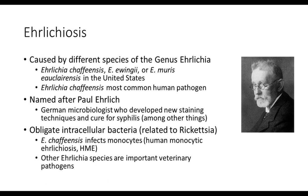Now I want to talk about ehrlichiosis, which we'll focus on for the majority of the day. Ehrlichiosis is caused by different species of the genus Ehrlichia, including Ehrlichia chaffiensis, Ehrlichia ewingii, or Ehrlichia muris ocularensis. Ehrlichia chaffiensis is the most common associated with human disease. These are all named after Paul Ehrlich, a German microbiologist who developed new staining techniques and a cure for syphilis. Ehrlichia is an obligate intracellular bacteria related to the Rickettsia, and Ehrlichia chaffiensis preferentially infects monocytes — the other name for this is human monocytic ehrlichiosis.